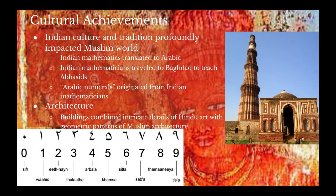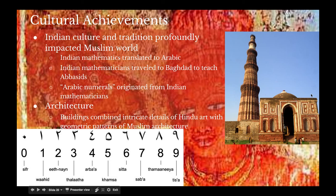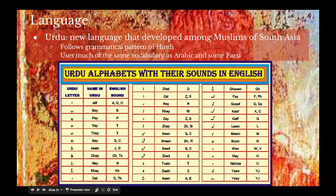This is best exemplified by Qutb Minar, a mosque that stands in Delhi — built over a Hindu temple. In terms of language, a new language develops in Northern India called Urdu, which developed among Muslims of South Asia.